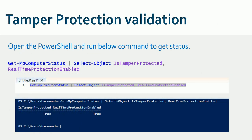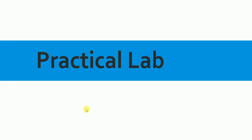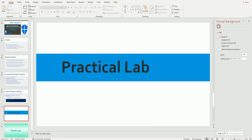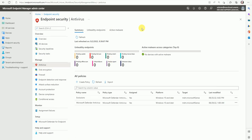Now, for validation — when we implement tamper protection, how do we make sure it's enabled on the end user machine? There is a command line you can use, and it will show you that tamper protection is true and real-time protection is true. Now let me go to the lab.